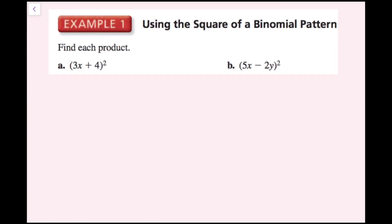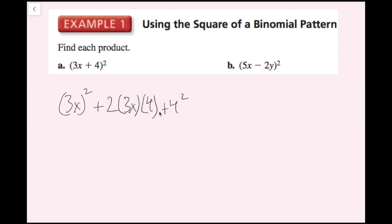For this example, we're going to find each product. Because I'm squaring this, I can use the square binomial pattern. So I have my first part squared: 3x squared, then plus 2 times my first term 3x times my second term 4, then plus 4 squared. So 3x quantity squared gives 9x squared, then 2 times 3 times 4 equals 24, giving 24x, and 4 squared is 16. So part A is 9x squared plus 24x plus 16.